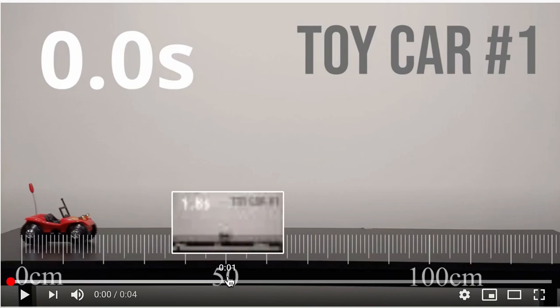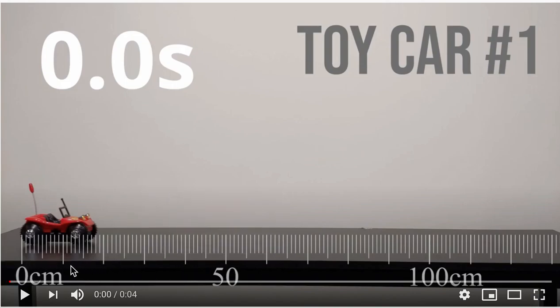So this is 50 centimeters, so each of these big lines is 10 centimeters. That means each of the little lines is actually one.